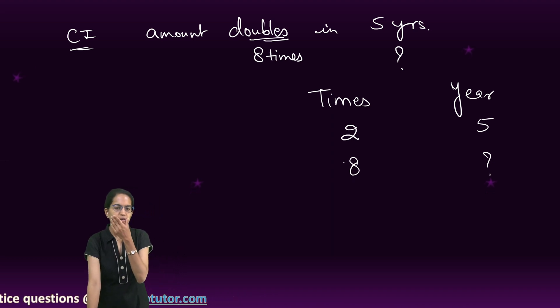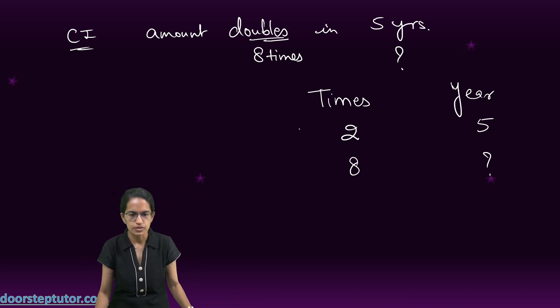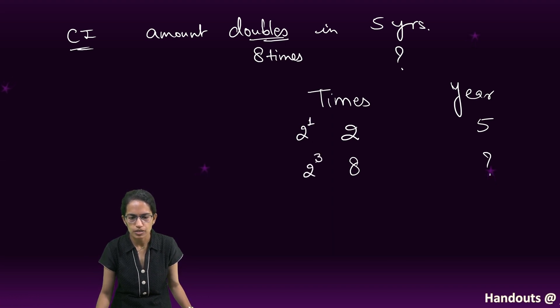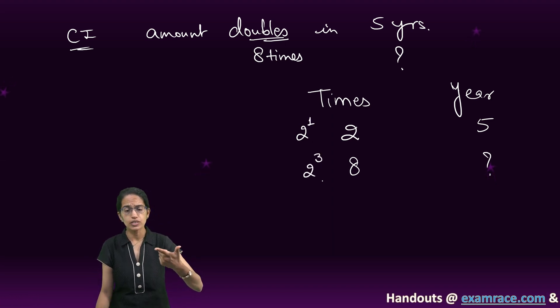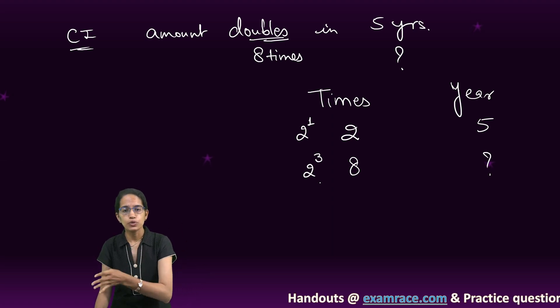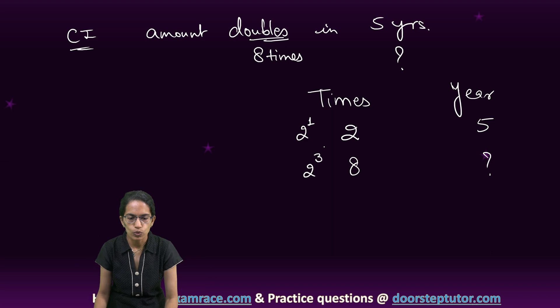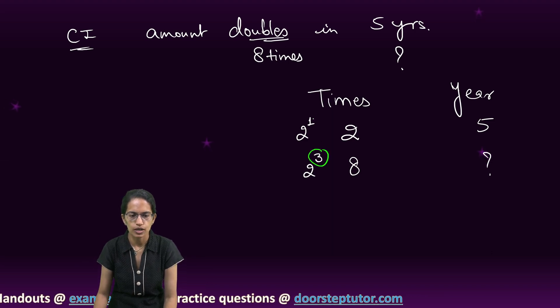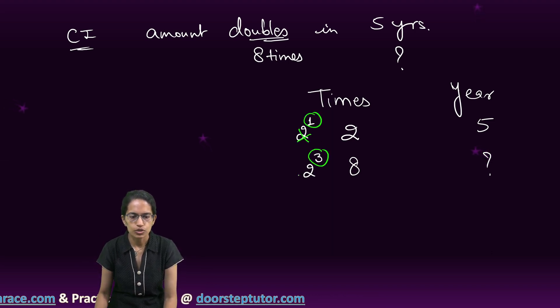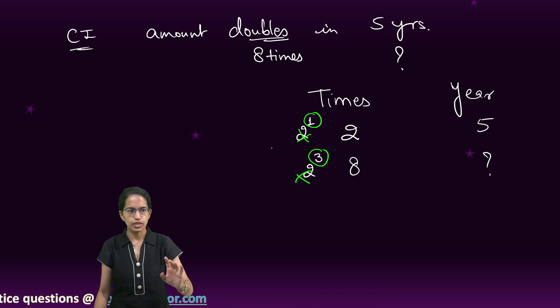For this 2 and 8, what I do is I find out the exponent powers. This becomes 2 raised to power 1 and this becomes 2 raised to power 3. 2 raised to power 3 is 8. 2 into 2 into 2, 2 into 2, 4 into 2, 8. Now I take only these exponents into account. I just ignore the base. The base is same, I ignore that.